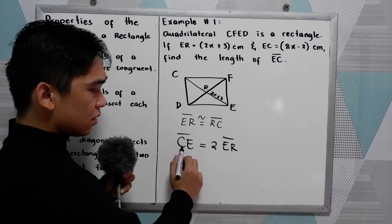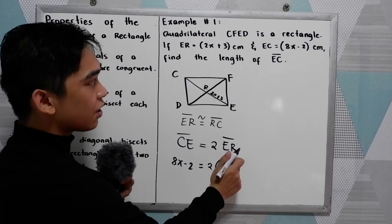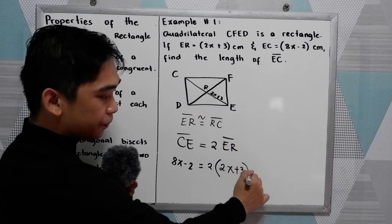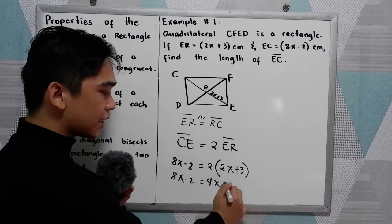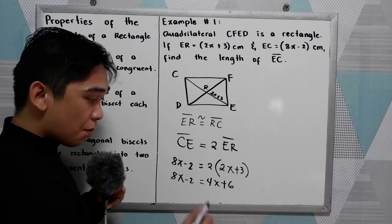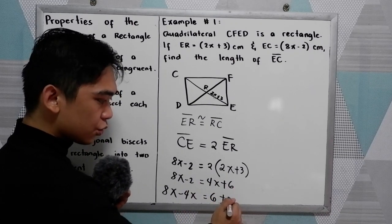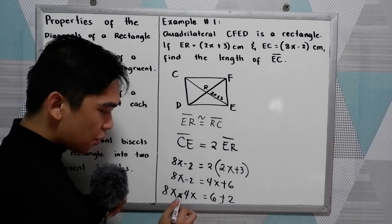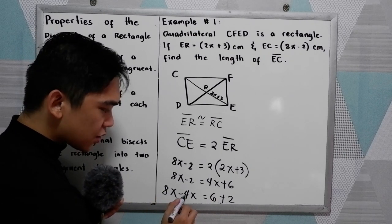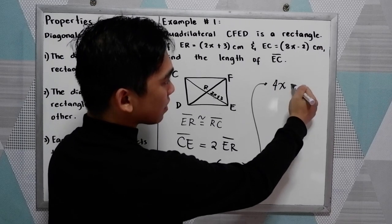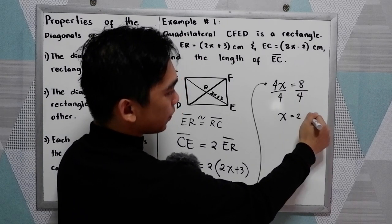So we have C-E or E-C equal to 8x minus 2 centimeters, and that equals twice E-R, where E-R is 2x plus 3. So 8x minus 2 equals 2 times (2x plus 3), which gives us 4x plus 6. Combining like terms: 8x minus 4x equals 6 plus 2.